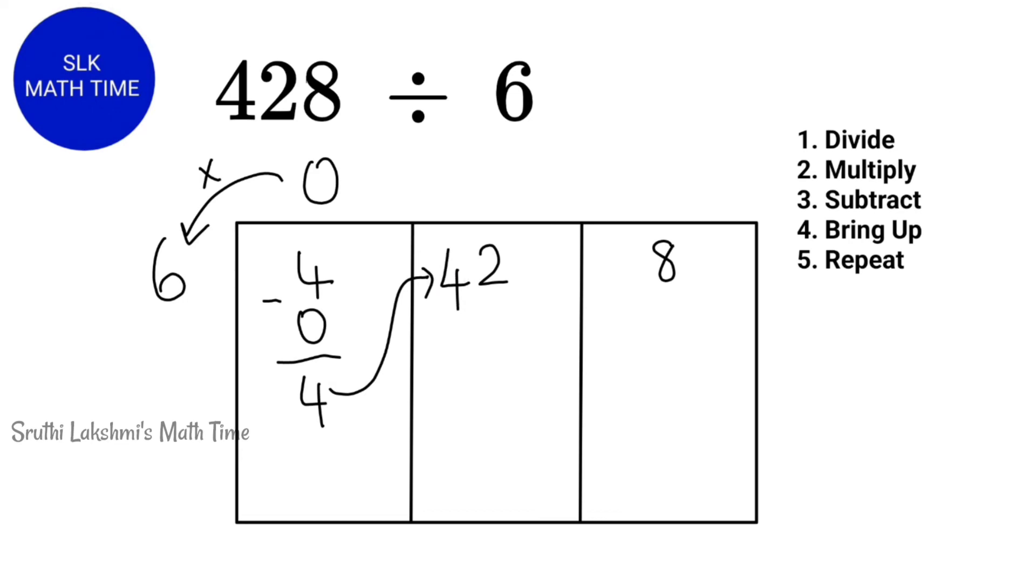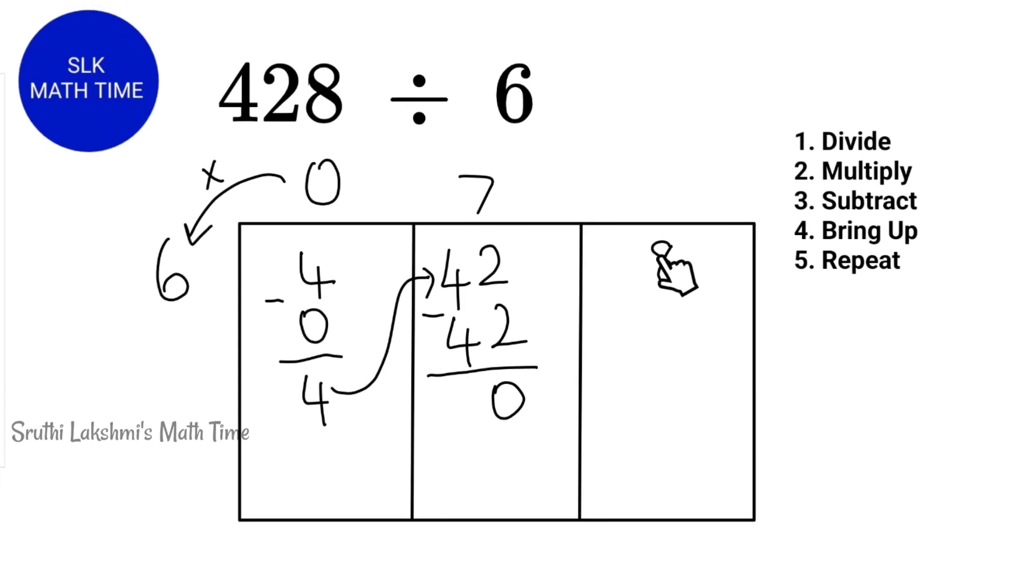Next, we see how many 6's can fit in 42? Well, 7 sixes can fit in 42. So, 6 times 7 is 42. So, 42 minus 42 is 0. Since we have a 0 here, we don't have to bring it up. How many 6's can fit in 8?